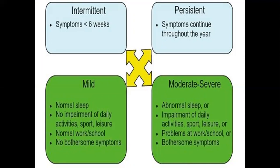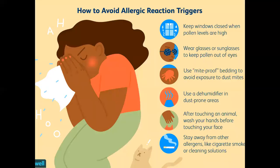Allergic rhinitis can also be classified according to symptom duration and severity into intermittent, persistent, mild, and moderate-severe. In the intermittent type, symptoms last less than six weeks; in the persistent type, symptoms continue throughout the year. In the mild type, there is normal sleep, no impairment of daily activities, and no bothersome symptoms, while in moderate-severe there is abnormal sleep, impairment of daily activities, and problems at school or work.